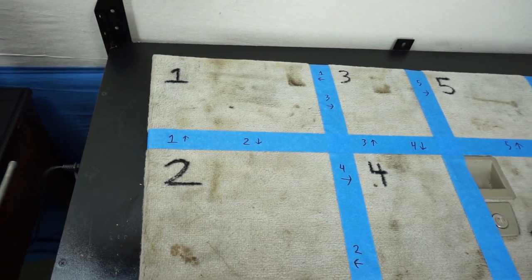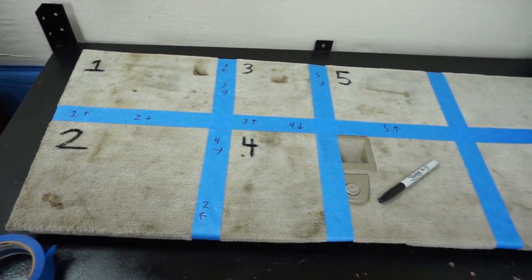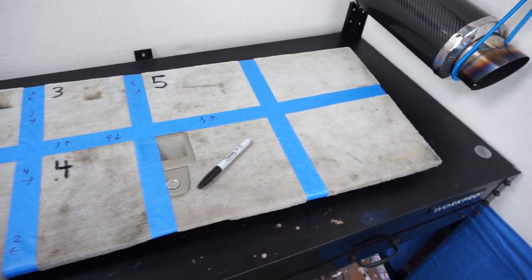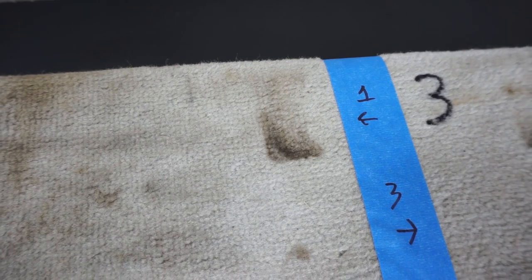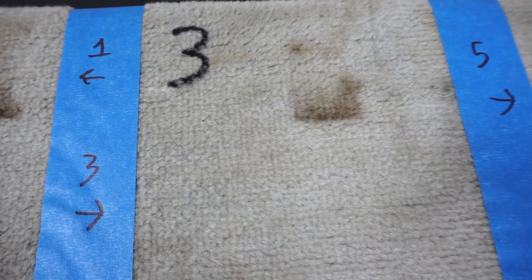I divided the carpet into testing sections, and I clearly marked them with a Sharpie. I'm also interested to see if the cleaners can not only take out the dirt, but also the Sharpie marks.